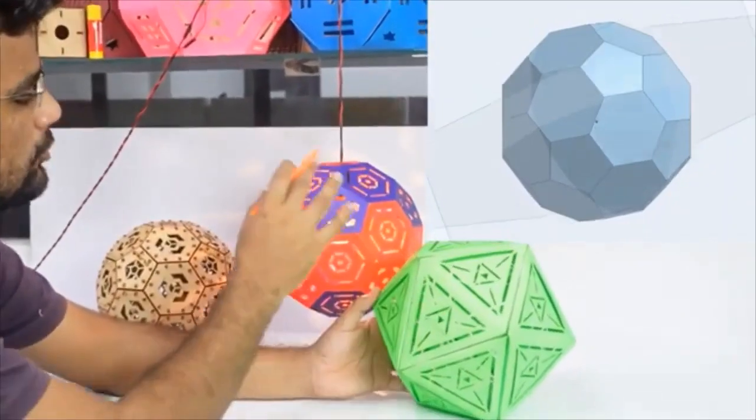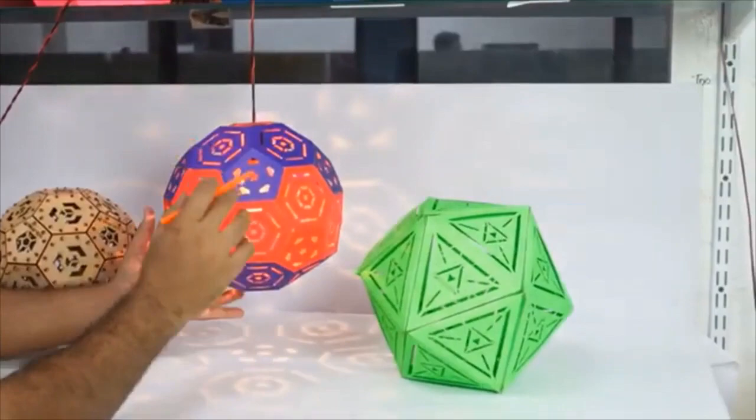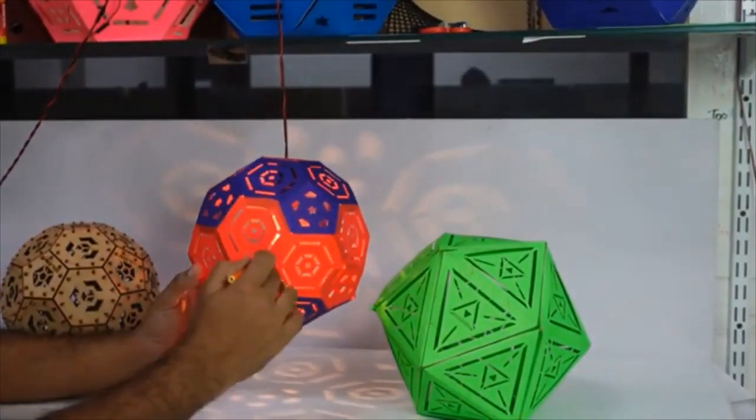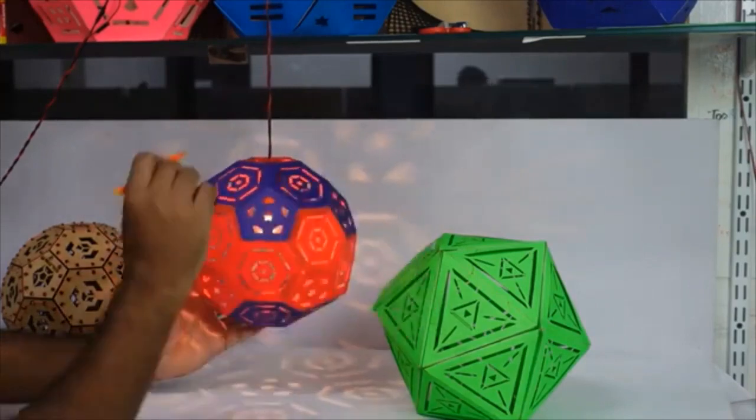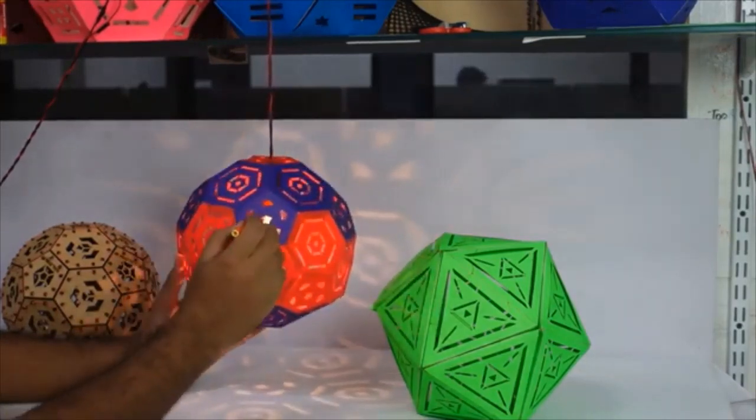From its vertices, here we can find that there are 12 vertices in this. So in this, there would be 12 pentagons. There are 20 triangles in this, so in this one, there would be 20 hexagons.